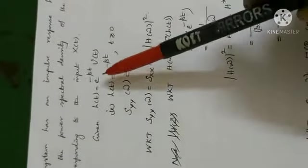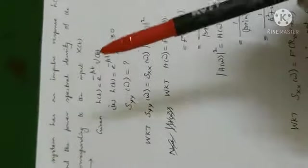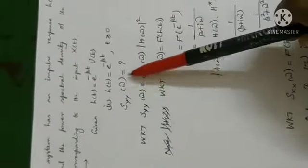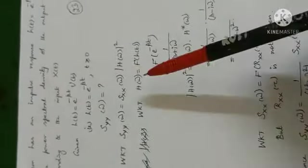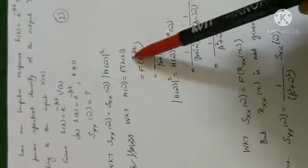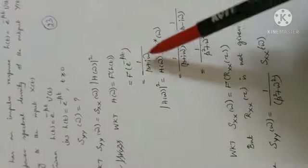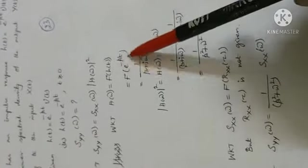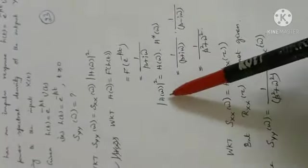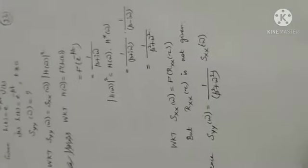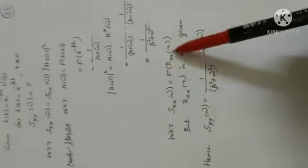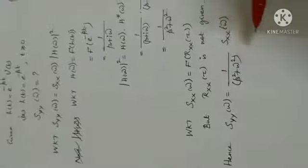They have given impulse response. Question is find Syy of omega. So this is our formula. We know transfer function equals Fourier transform of h of t. H of t is e power minus bt. We know the formula. If limits are given, we go for integration. Otherwise, directly we write when we know the formula. We know what is h of omega square. And Sxx of omega is this one, but Rxx of tau is not given in the problem. Then how can we find Sxx of omega? So just leave it as it is in the formula. Write this answer alone, which completes the problem. Done.